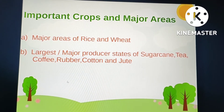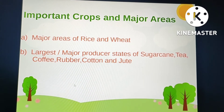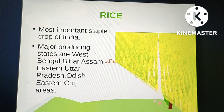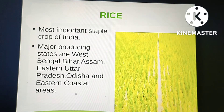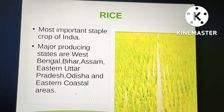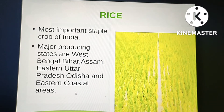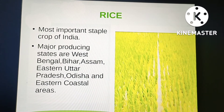Let us start with rice. Rice is the most important staple crop of India. The major producing states are West Bengal, Bihar, Assam, eastern Uttar Pradesh, Orissa, and the eastern coastal areas of India. Let's mark these on the map.